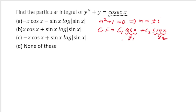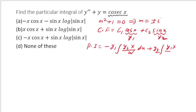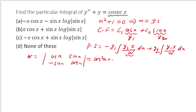The PI formula is: PI = -y₁·∫(y₂·X/W)dx + y₂·∫(y₁·X/W)dx. Here X is the right-hand side divided by the coefficient of the highest order term. The coefficient of y'' is 1, so X = cosec x. We need the Wronskian W.